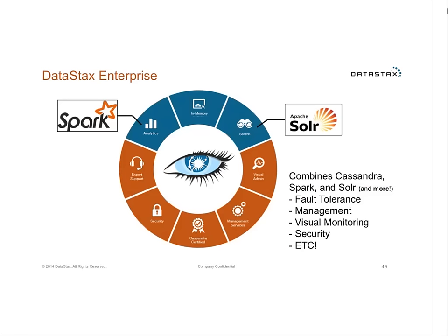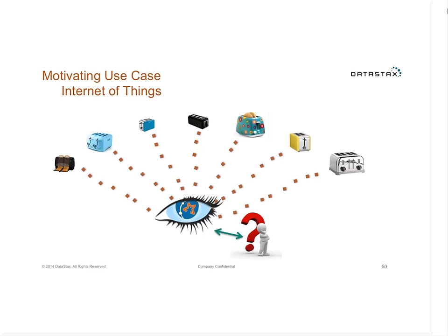A quick plug on DataStax Enterprise: it delivers Cassandra at its core, plus Spark integration built into the platform, as well as integration with Apache Solr on the search side. Coming back to our IoT use case, we can see where Cassandra fits in — receiving all the data and scaling for all the toasters we add — and how Spark helps us address the broader set of analytical questions that people will want to ask of that data.